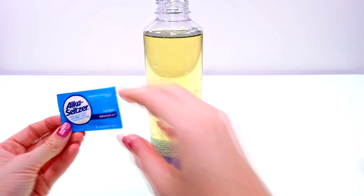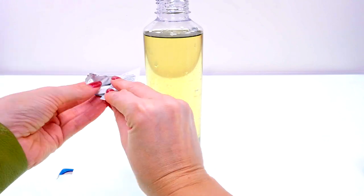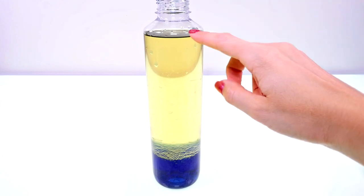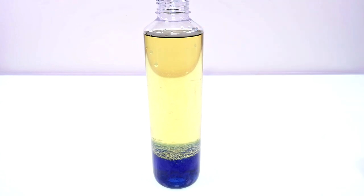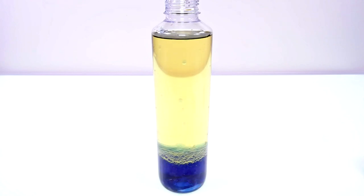Next, take an Alka-Seltzer tablet and break it up into little pieces. You definitely want to leave a little bit of room at the top so that when you add the Alka-Seltzer it doesn't spill over. So I'm gonna add one little piece at a time.